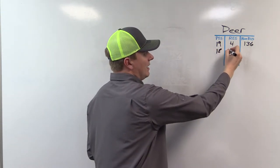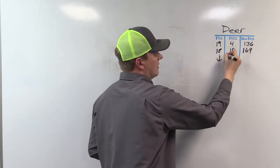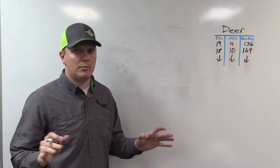You go down to 18, there's 10 residents and 169 non-residents that have those point levels for deer. Coues deer and mule deer are lumped together.